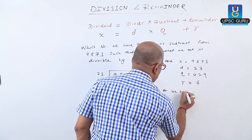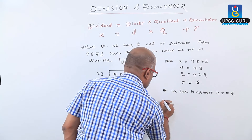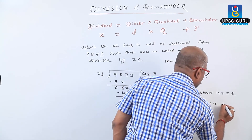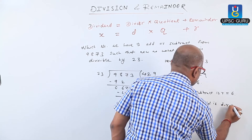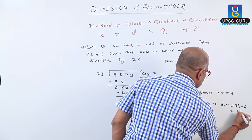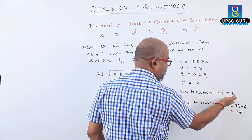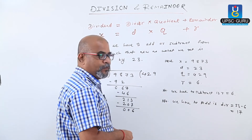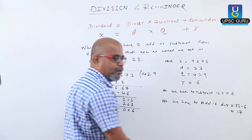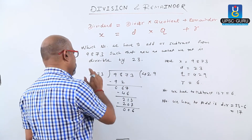The number we have to subtract is R equals 6, and the number we have to add is D minus R, which is 23 minus 6, giving us 17. So the number to subtract is 6 and the number to add is 17. That means when we subtract 6 from 9873, the number 9867 is exactly divisible by 23. And when we add 17 to 9873, the number we get is also exactly divisible by 23.